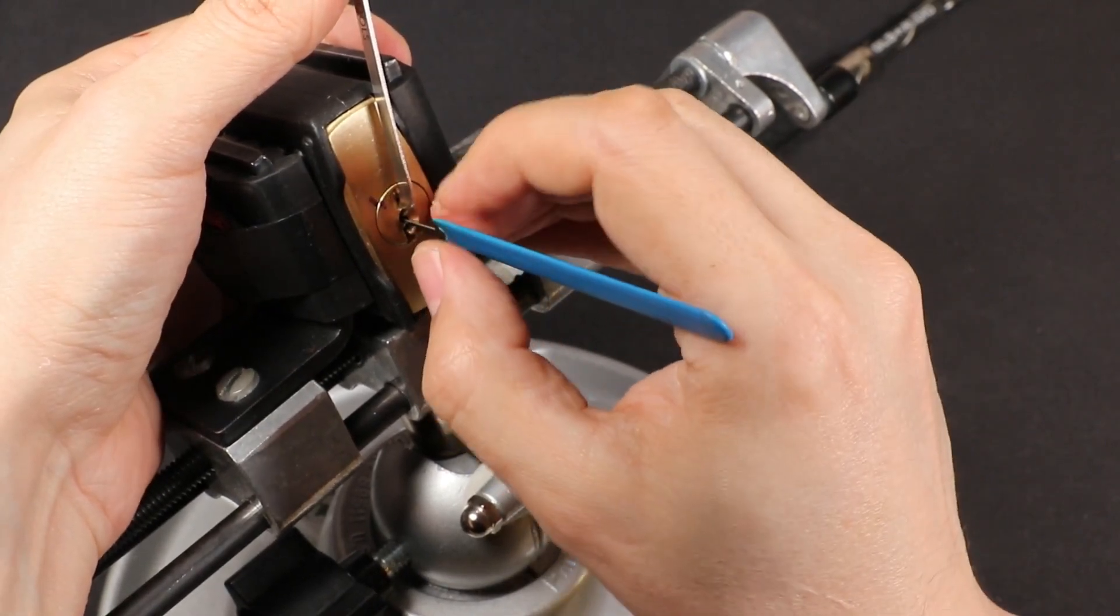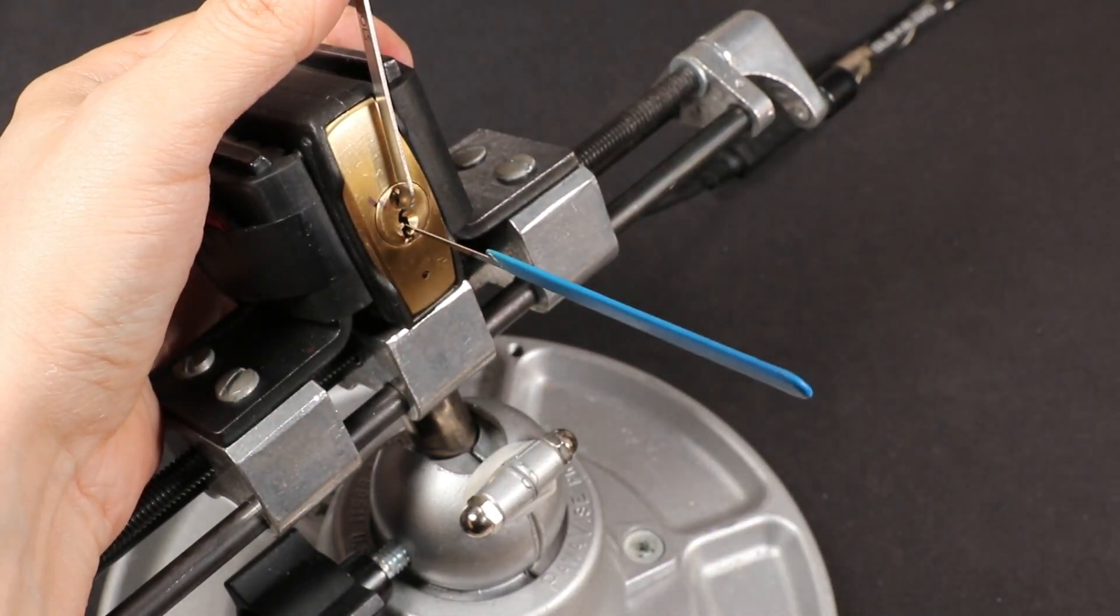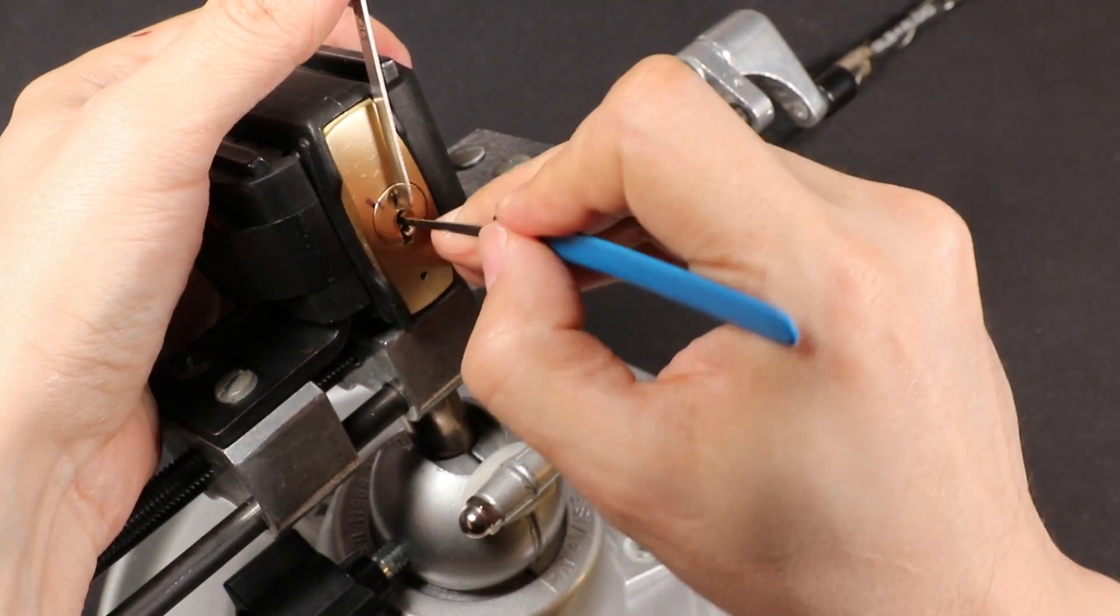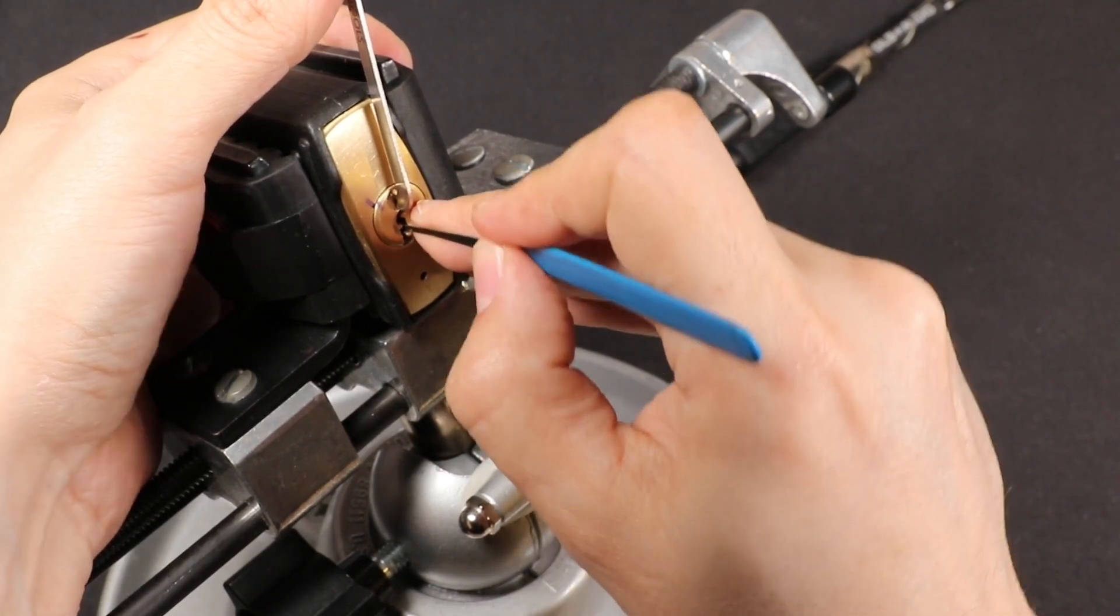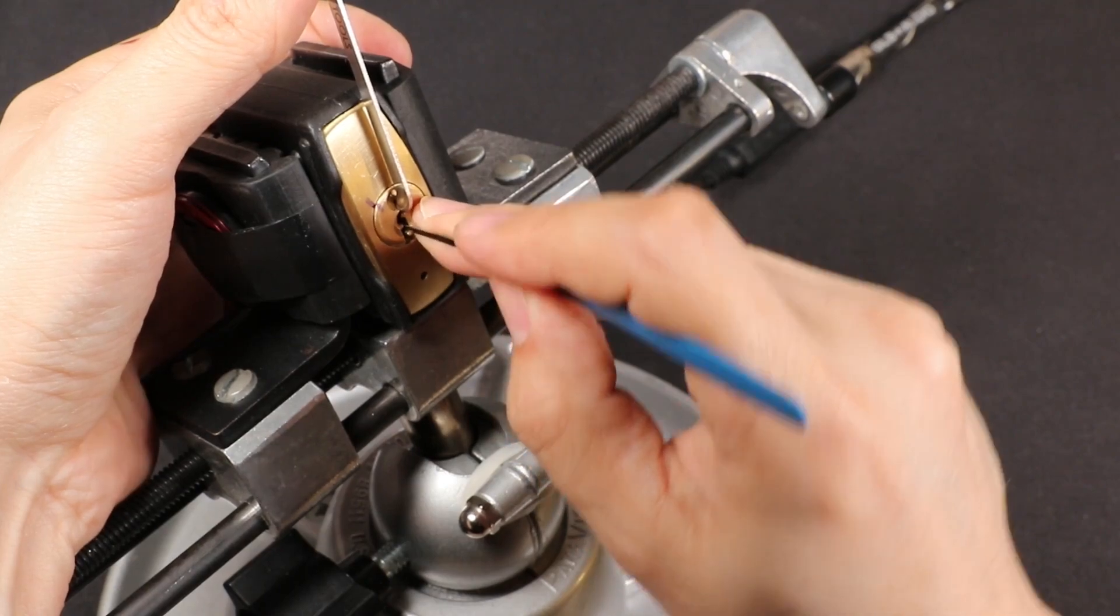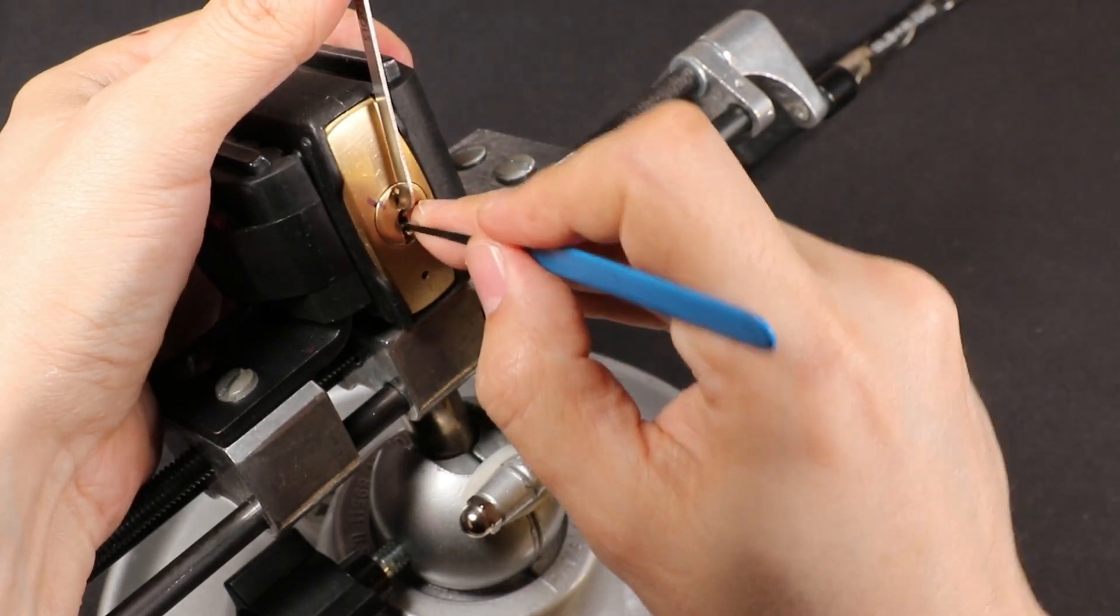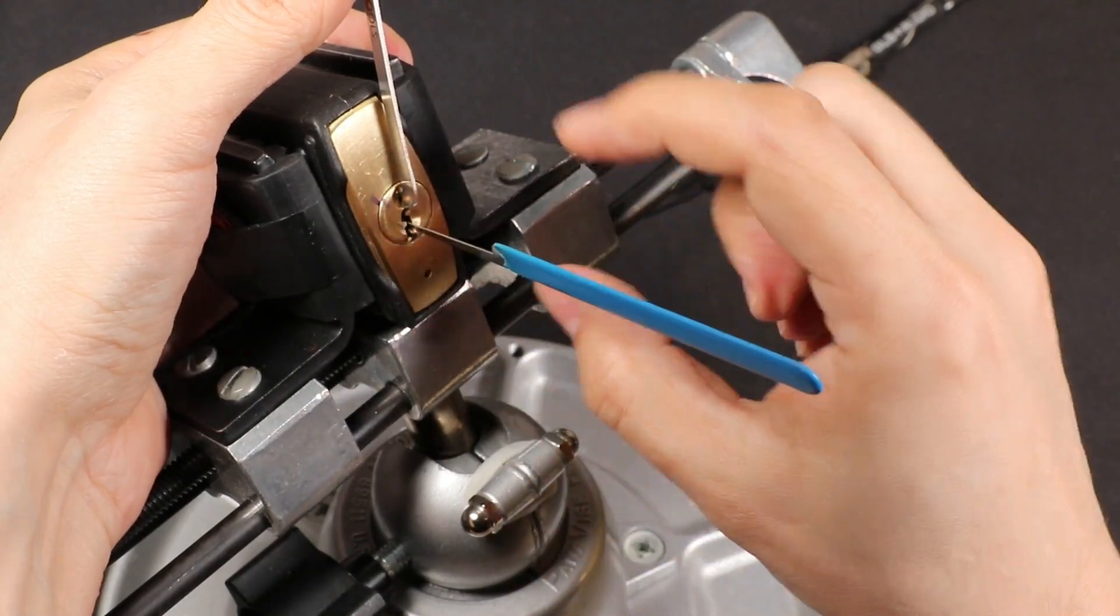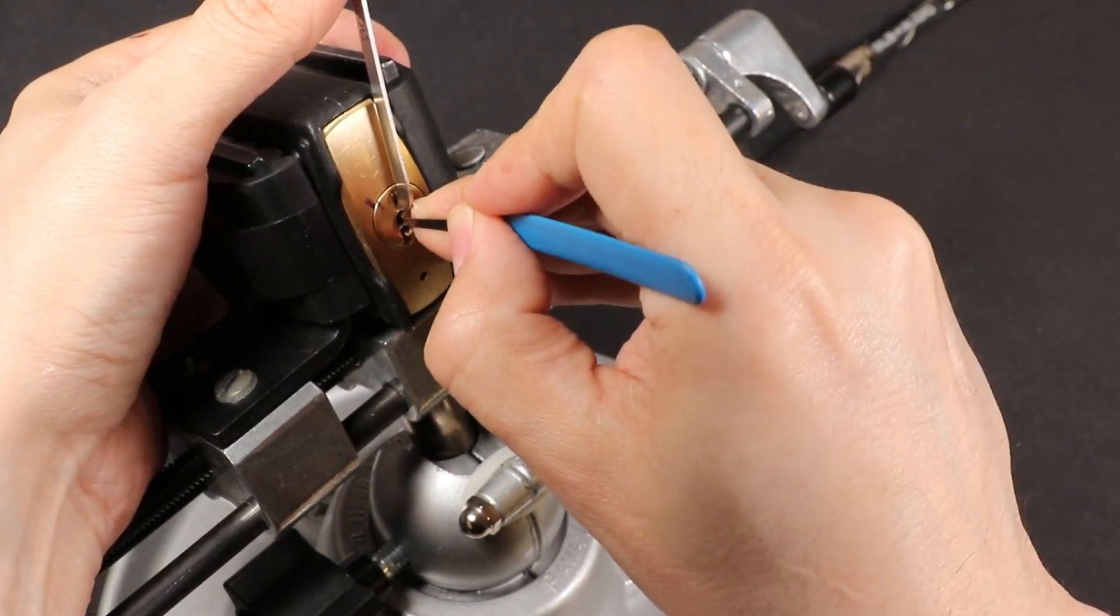I just had to reset pin 6 again. Coming back forward, I notice when I touch pin 2 it drops into an even deeper false set. Pin 2 is so high up I can't actually feel it anymore with this pick. Coming back, I see pin 1 is giving me counter rotation. Let's set that. Again, when I touch pin 2, it goes into deeper false set, so I think I've got a long spool on pin 2.